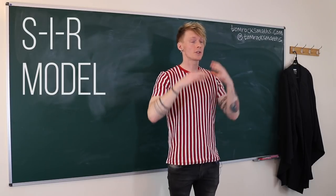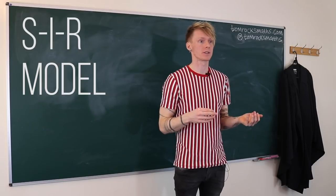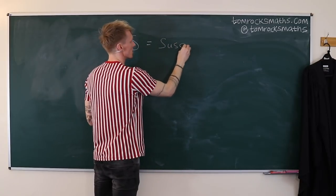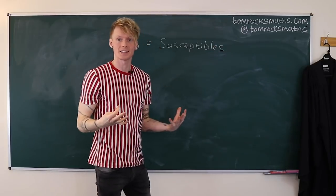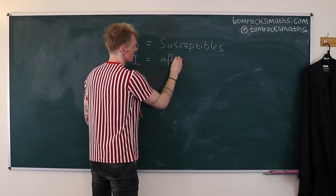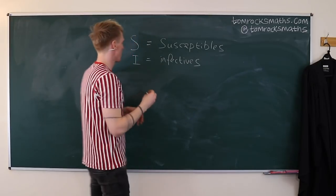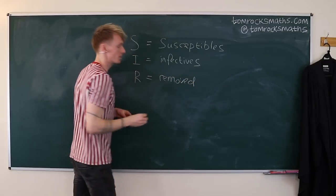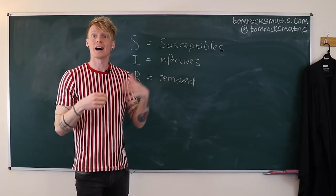In the SIR model, the total population is divided up into three categories or three components. First we have S, which equals susceptibles — people who could potentially catch the disease. Then we have I, called the infectives — people who currently have the disease and can infect others. And R stands for removed: people who have already caught the disease and have now either recovered or died.